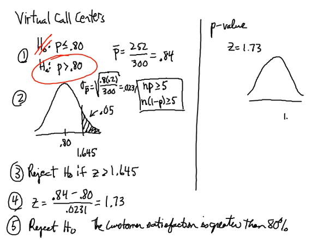0.9582. So if I'm looking up 1.73, the area under the curve to the left of that is 0.9582. But what I want for a P-value is actually to the right of that. So what I've got to do is I've got to take that 0.9582 away from 1 and I come up with 0.0418.